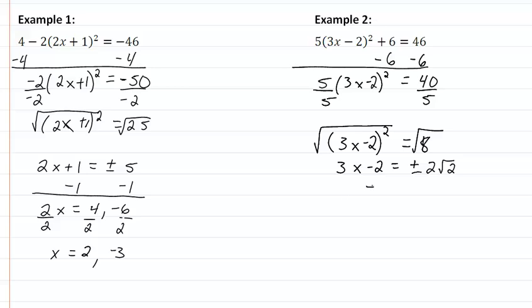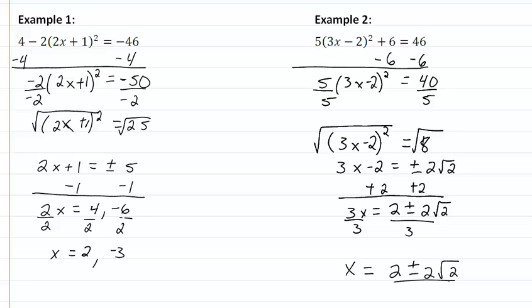Add 2 to both sides, and we get 3x equal to 2, plus or minus 2 square root 2. Divide everything by 3. And so we get that our solution then, is x equal to 2, plus or minus 2 square root 2, all over 3.